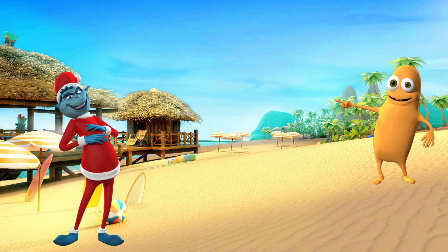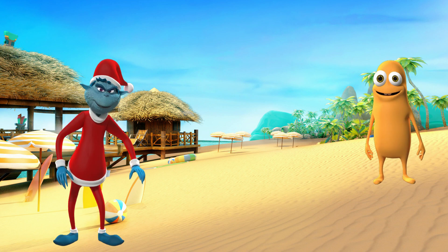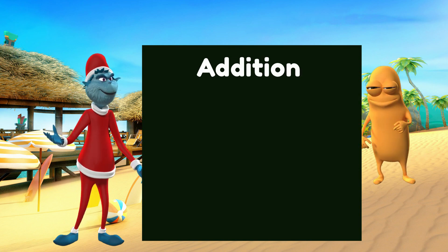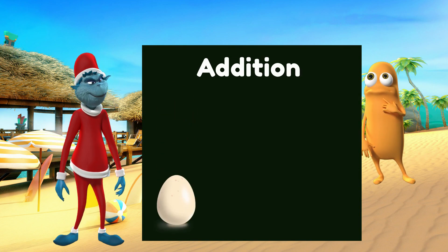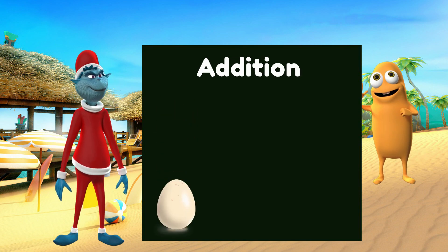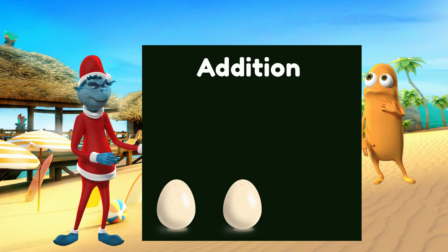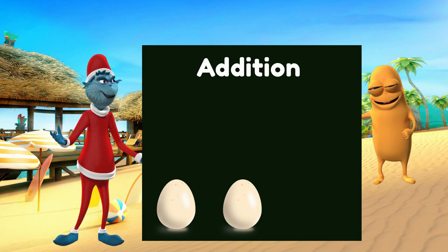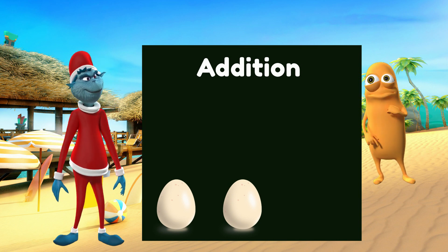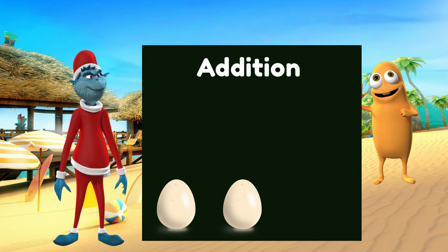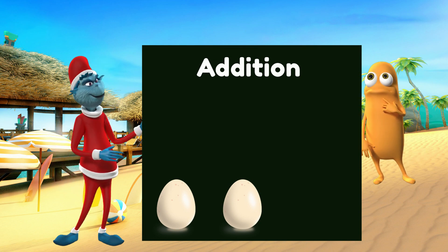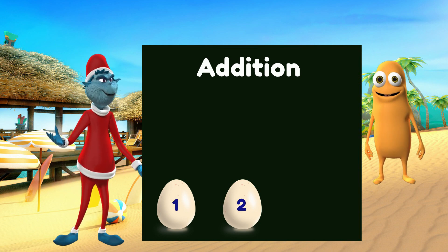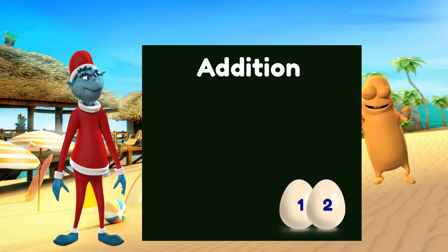Let's use examples to illustrate. If Mascot has one egg and then we give him one more egg, then Mascot will now have how many eggs? Combining one egg and one egg and counting the combined number of eggs: one, two. Now Mascot is happy!